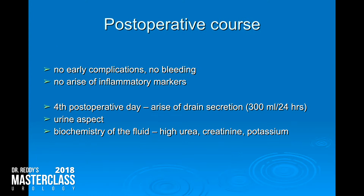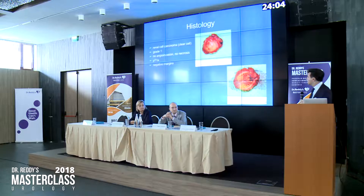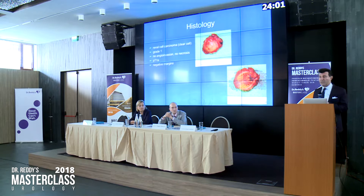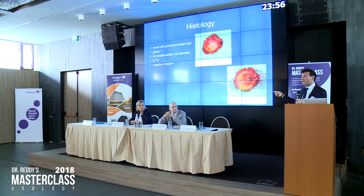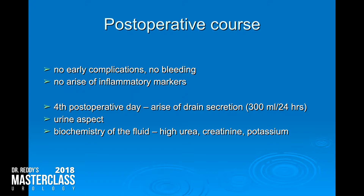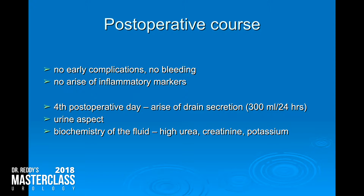We took out the tumor and the histology was RCC grade 1, pT1A. Having done a radical nephrectomy with this histology, I would have been in trouble with the patient — it's a little bit overkill. So this was all good, no early complications, no bleeding, everything was good.